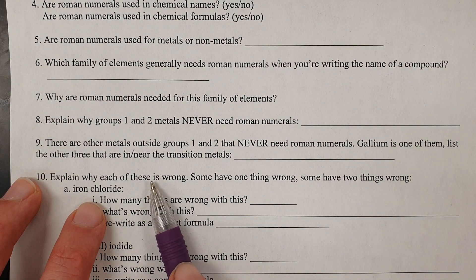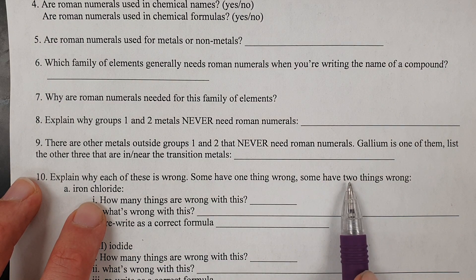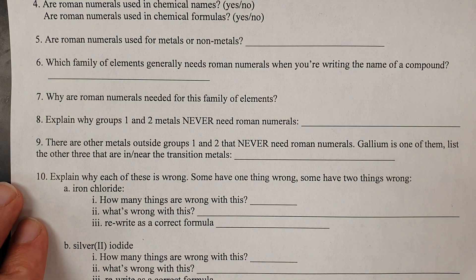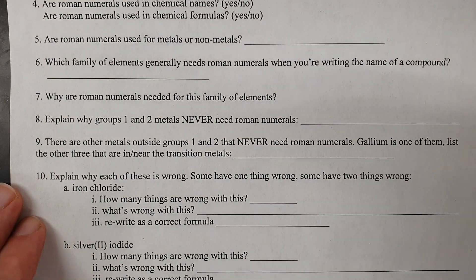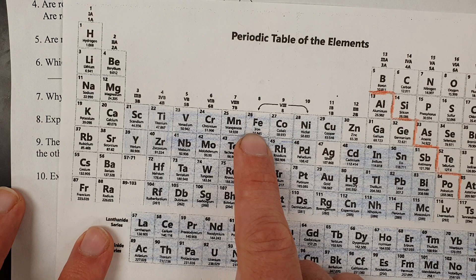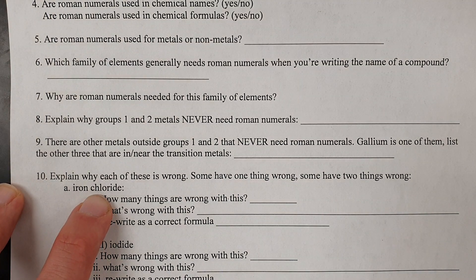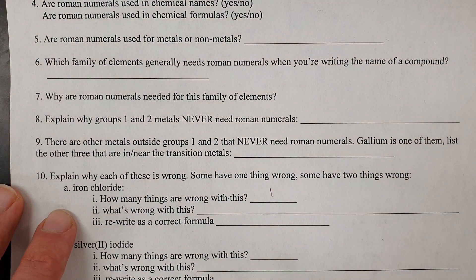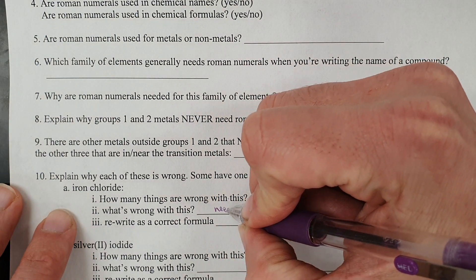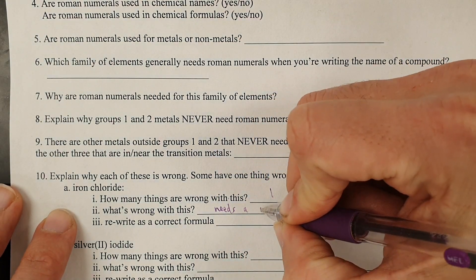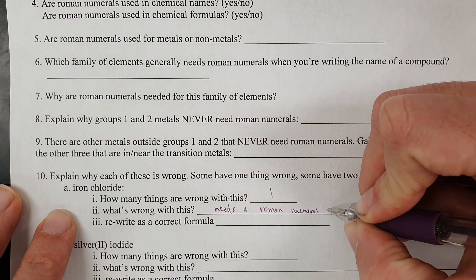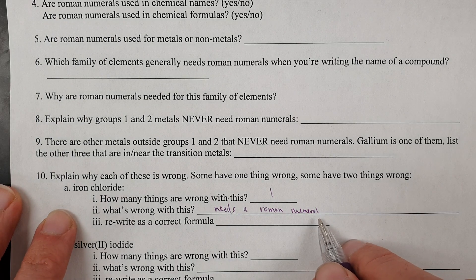Now for this next section: explain why each name is wrong. Some have one thing wrong, some have two or more things wrong. Iron chloride — what's wrong with this? Iron is a transition metal. Iron needs a Roman numeral. It doesn't have a Roman numeral, and that's a problem. The spelling is correct, but it's just missing a Roman numeral. So it needs a Roman numeral because iron has a variable charge.